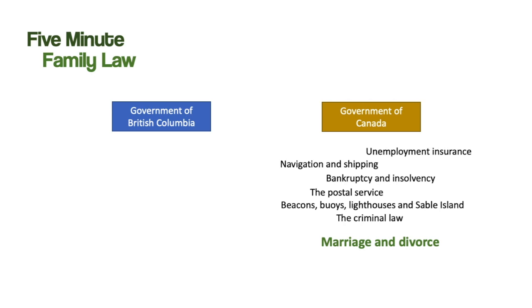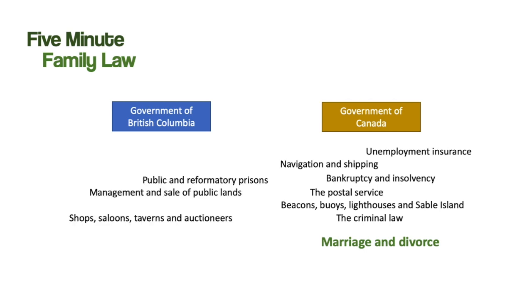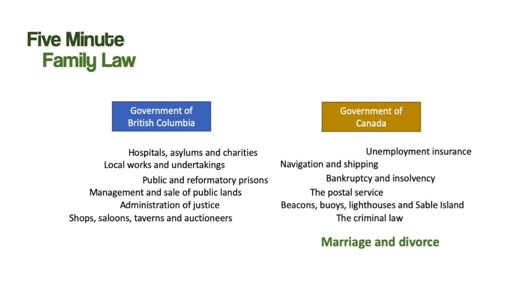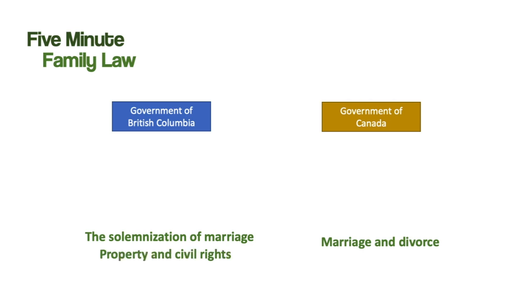Section 92 gives the provincial government powers over other things, including public and reformatory prisons, shops, saloons, taverns and auctioneers, the management and sale of public lands, local works and undertakings, hospitals, asylums and charities, the administration of justice, and the solemnization of marriage and property and civil rights. Together, these powers are responsible for giving us the legislation on family law.